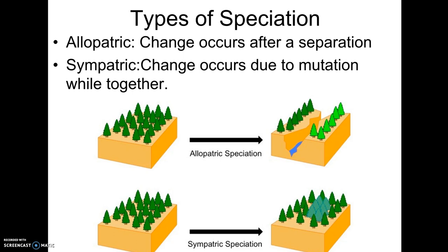Today we're going to wrap up the evolution notes. The first thing we're going to talk about is types of speciation. Keep in mind, what is speciation? Speciation is the development of separate species. Yesterday we talked about how if two groups of organisms no longer can interbreed with one another and make fertile offspring, we would consider them separate species.